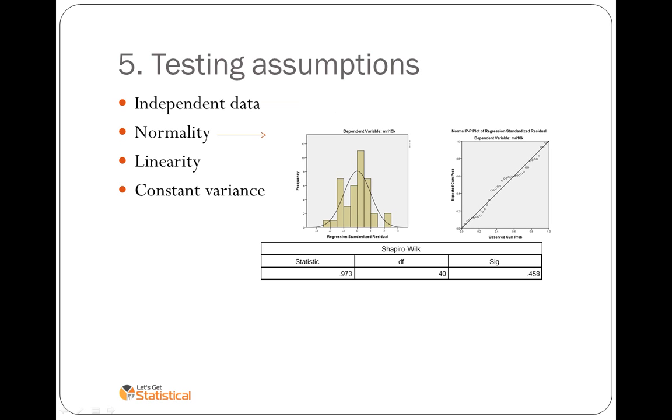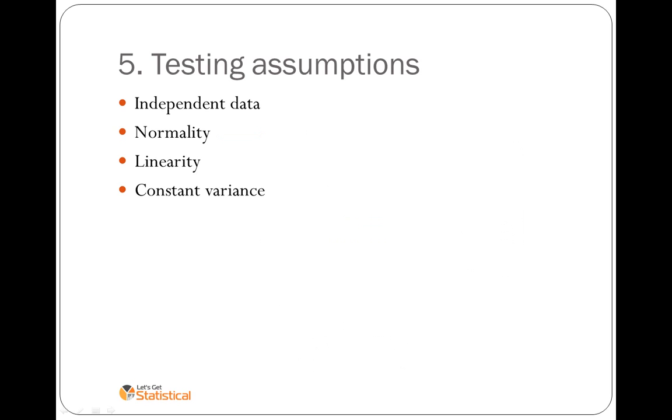Normality of the residuals, we have two graphs that tell us that. We're looking for the histogram to be normally distributed and the points not snaking. We're looking for the Shapiro-Wilk test to be greater than 0.05 to say there's no significant deviation from normality.